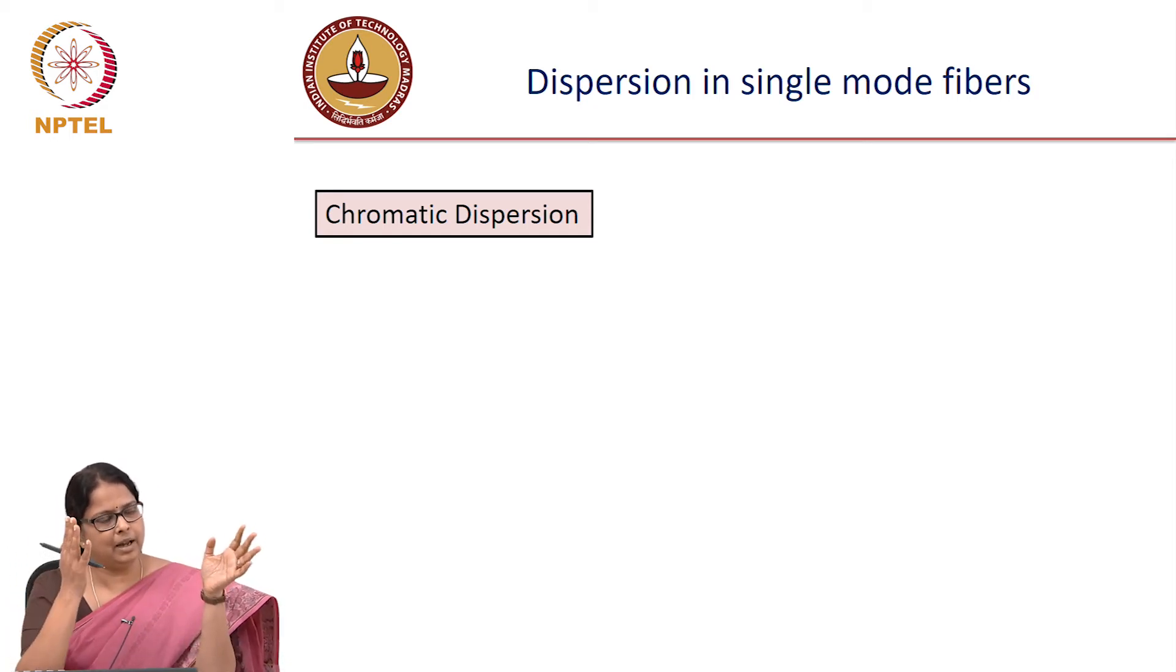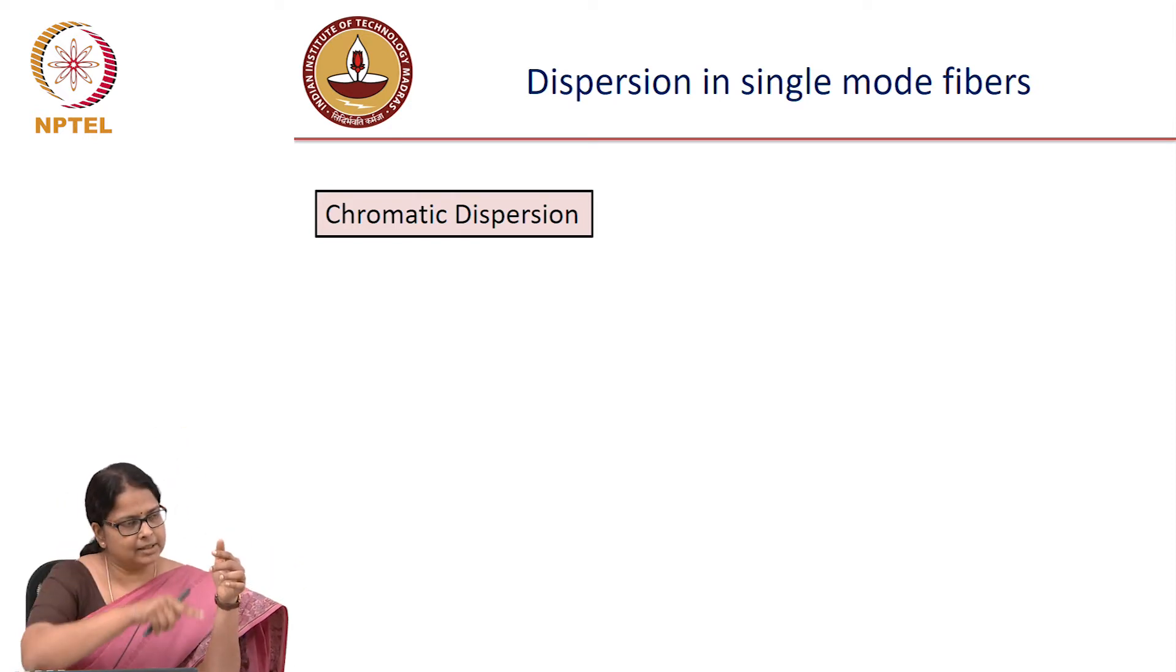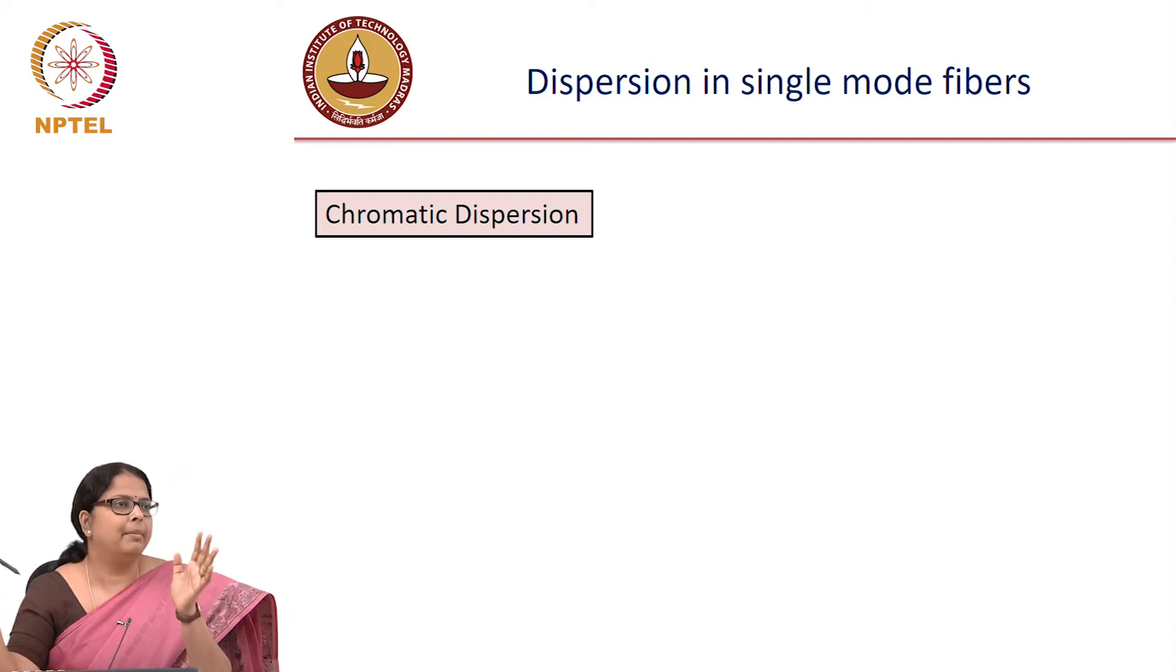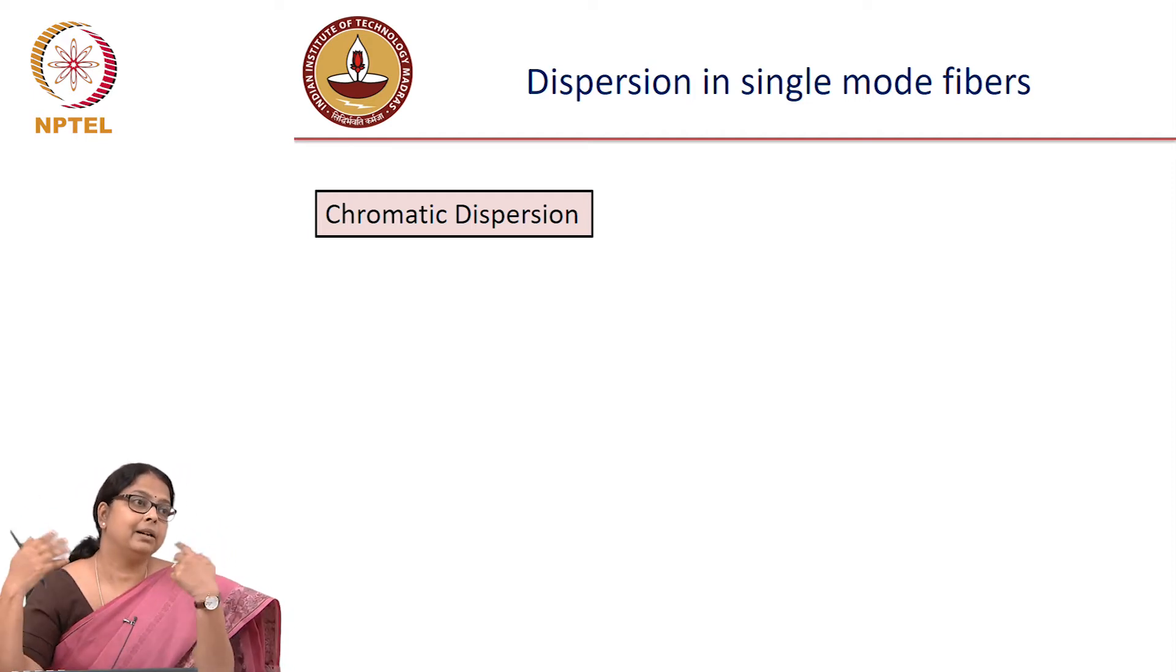You can say that my output information as a column vector for the hundred modes is equal to input information, again a column vector multiplied by if there are hundred modes it will be like hundred by hundred matrix. If I have the computational ability to calculate what is that mixing and delay, maybe it is possible.